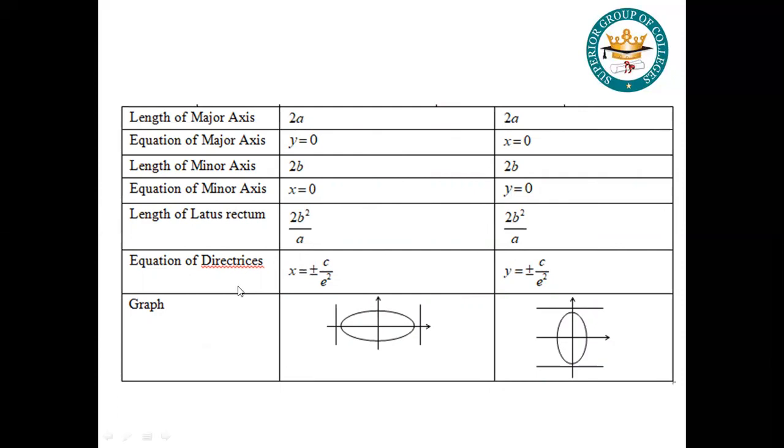The length of the latus rectum: remember that MCQs have come many times: 2b² / a. Equation of directrix: x = ±a / e or y = ±a / e. This graph will be on the x-axis for major axis on x-axis, and major axis on y-axis when on y-axis.